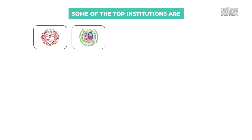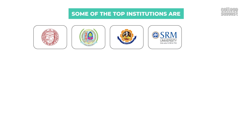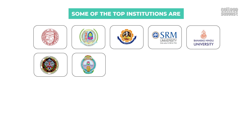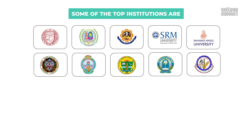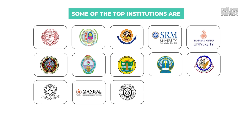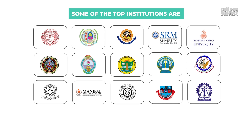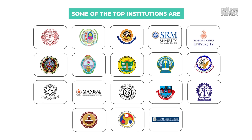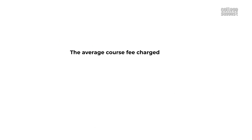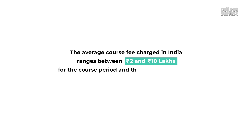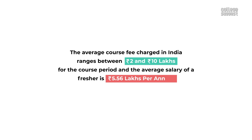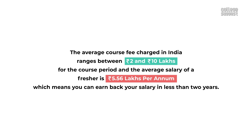Some of the top institutions are: University of Delhi, Maharshi Dayanand University (MDU), Bharathiyar University Coimbatore, SRM University, Banaras Hindu University, Chaudhary Charan Singh Haryana Agricultural University, Acharya Nagarjuna University, Punjab Agricultural University, Guru Nanak Dev University, Dr. Rajendra Prasad Central Agricultural University, Osmania University, Manipal University, University of Kolkata, Madurai Kamaraj University, Indian Institute of Technology Kharagpur, IIT Madras, IIT Guwahati, and AWH Special College. The average course fee in India ranges between 2 and 10 lakh rupees, and the average salary for a fresher is Rs. 5.56 lakhs per annum, meaning you can earn back your investment in less than 2 years.